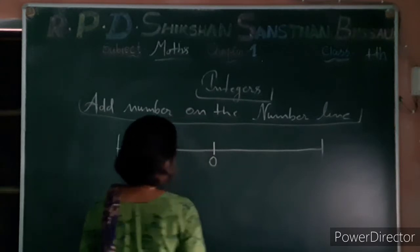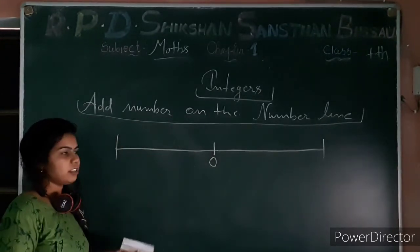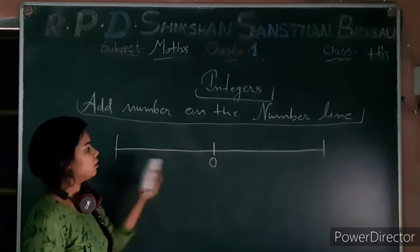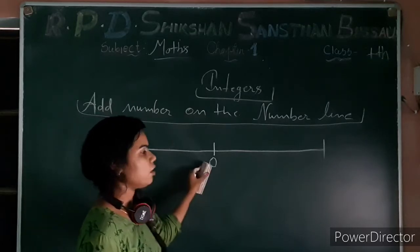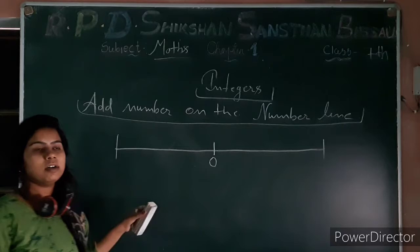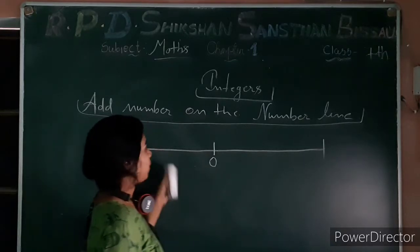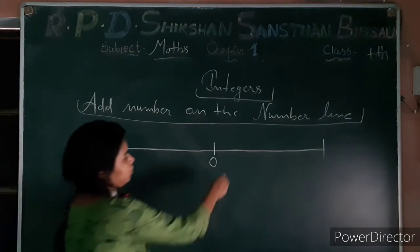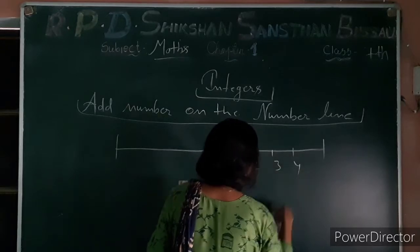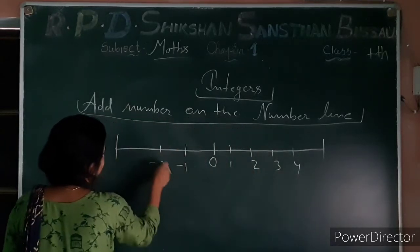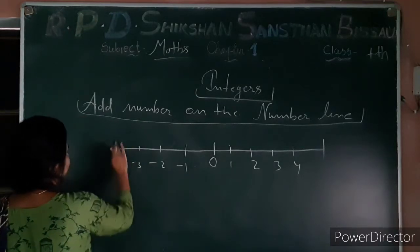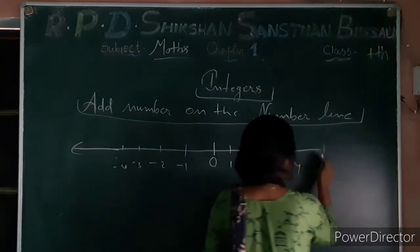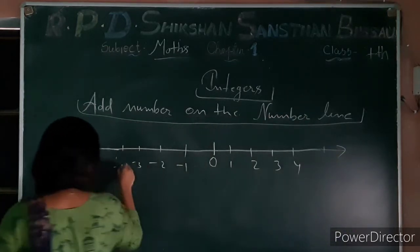A number line is made with positive integers and negative integers. From 0 to the right are positive integers in increasing order. To the left of 0 are negative integers. For example: 1, 2, 3, 4 are positive integers, and minus 1, minus 2, minus 3, minus 4 are negative integers.